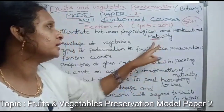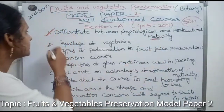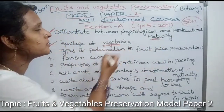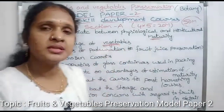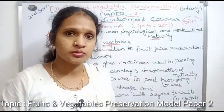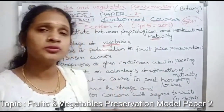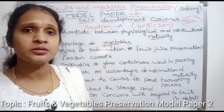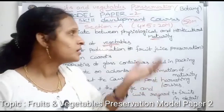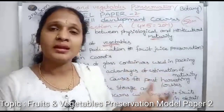Second question: spoilage of vegetables. When vegetables are stored in our homes and houses, spoilage can occur. We need to understand the factors that cause this spoilage.